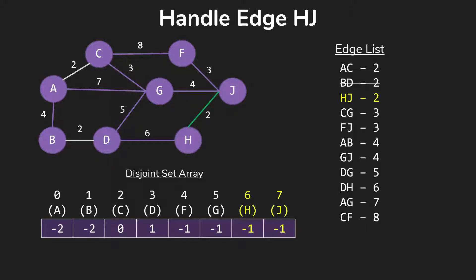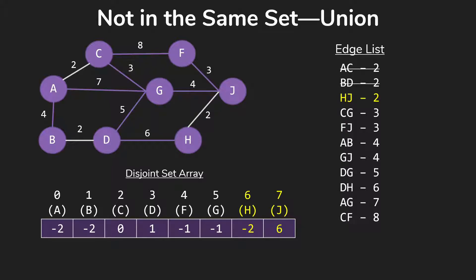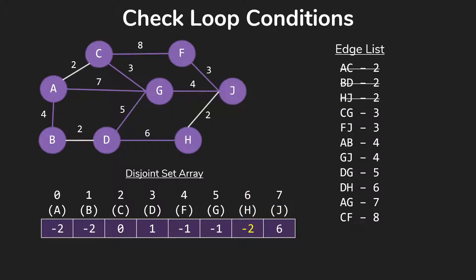so we keep going. Handling HJ, those are in different sets. So we do that union, add that edge to our tree. Still haven't finished,